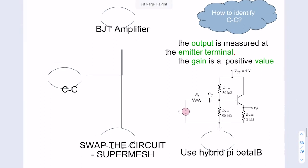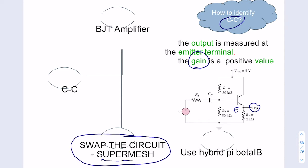Here are the steps to derive the gain of the common collector. First, identify what is common collector: V out is at the emitter, whereas in common emitter V out is at the collector, and your gain is a positive value. The keyword here is you need to swap the circuit and you need to do super mesh. Super mesh means you have one current source in between two loops, and you solve it by ignoring that current source and applying KVL across those two loops.